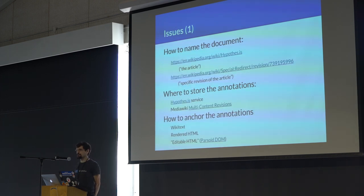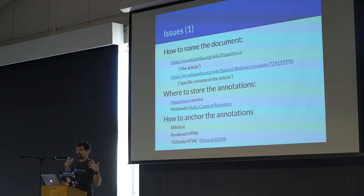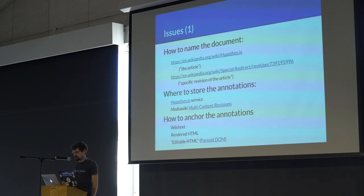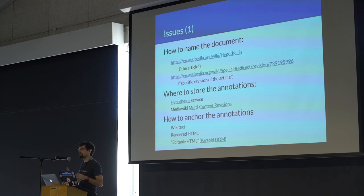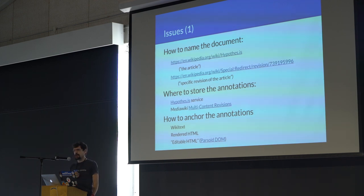Here are some of the issues — the reason I'm here and things I'd like to talk about today. Some of these are more or less settled. One is how to name the document: we have a name for the article as well as a name for the specific revision. The URL in your browser is the article name, but what we actually store the annotations against is that specific revision. Where to store the annotations: we have a refactoring of our underlying backend called multi-content revisions, which will make it a lot easier to store a bunch of associated content with an article in our database. That's how we plan to store them in the future.